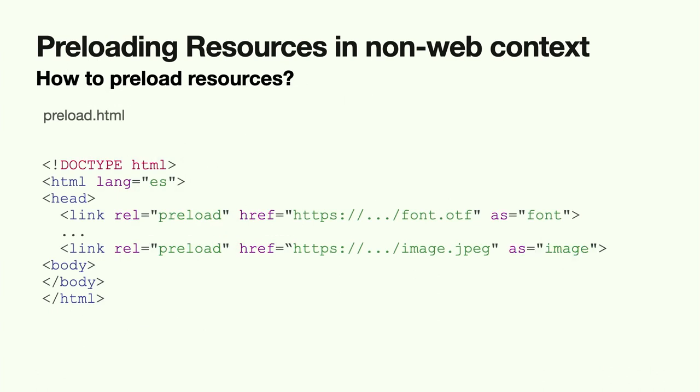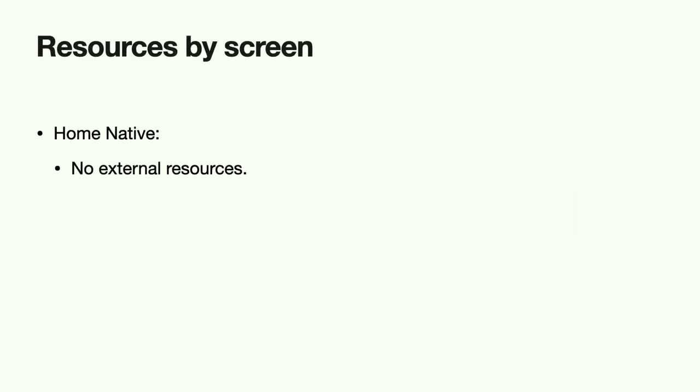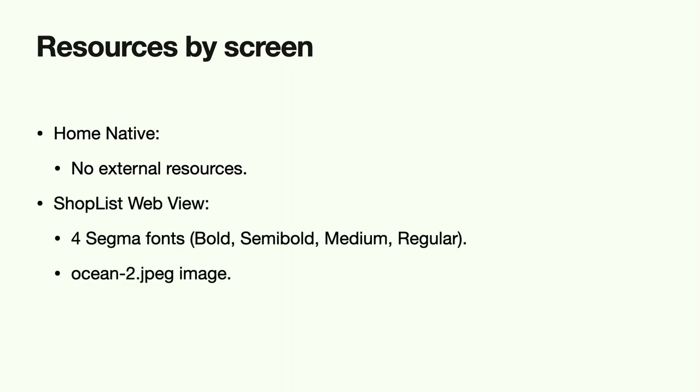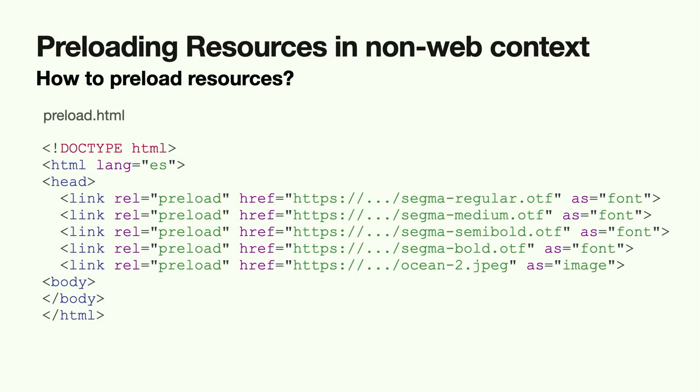The preload.html is an HTML document that contains all the sources we want to preload. The HTML document has no body — it's only head tags with link tags. In this case, home native doesn't have any resources, and the ShopList WebView has five resources. So preload.html needs these five link tags to work.